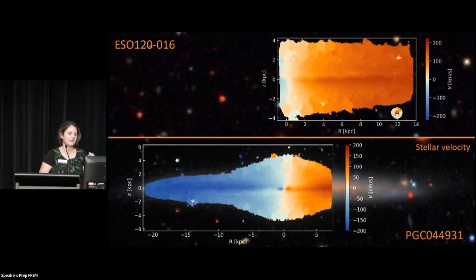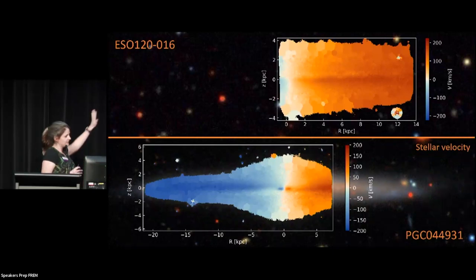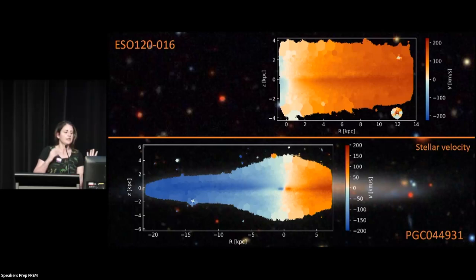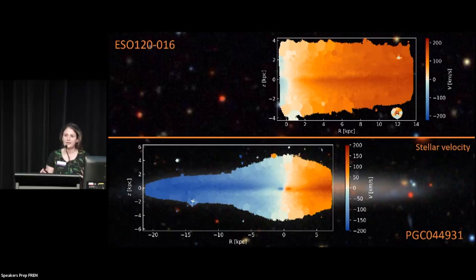Now some derived data products — these are the stellar kinematics. The stellar velocity: the top one is just a plain old disk galaxy, and the bottom one has a boxy peanut bulge, like I was saying earlier — the outward projection of a buckled bar.